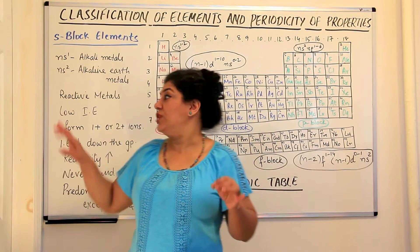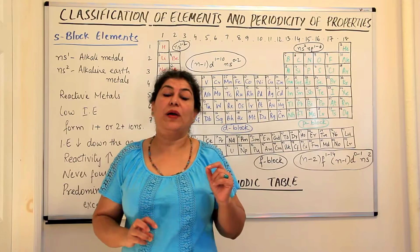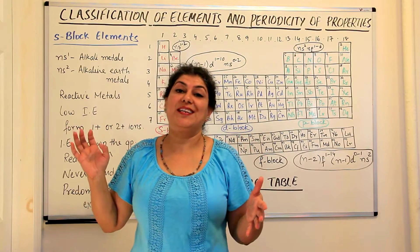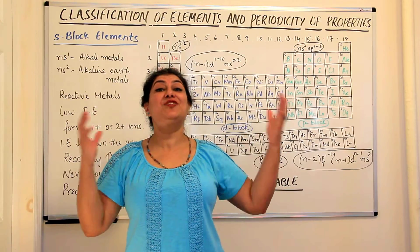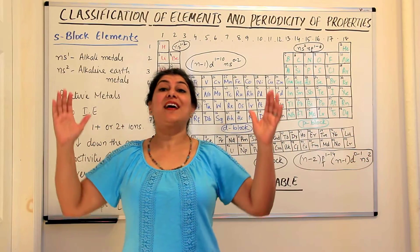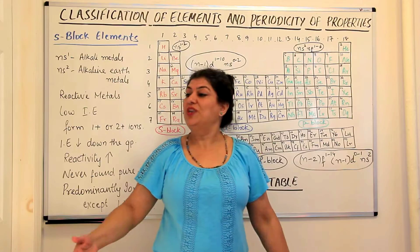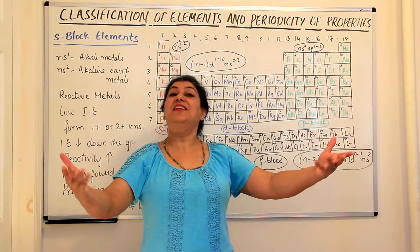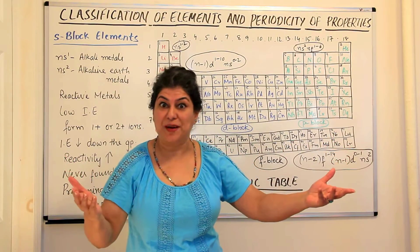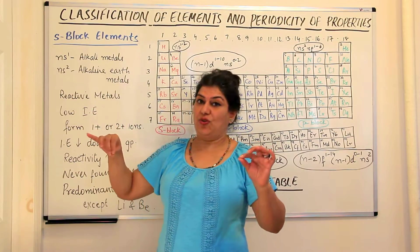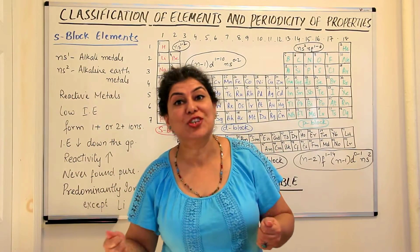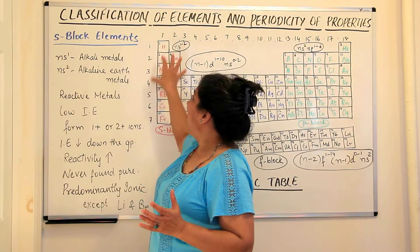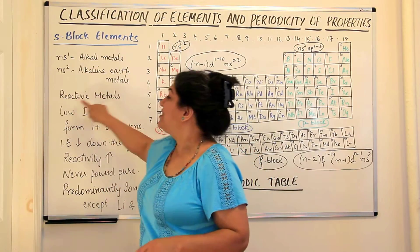Any element that loses electrons in chemical reactions to acquire the octet is a metal. Metals are the kings of the elements — they are the ones that donate electrons. The ease with which they lose electrons shows how reactive that metal is. So we call the alkali and alkaline earth metals reactive metals. Why are they reactive? Because they have to lose only one or two electrons respectively.